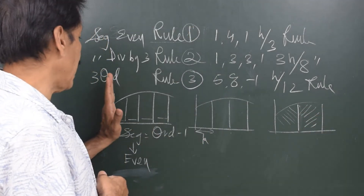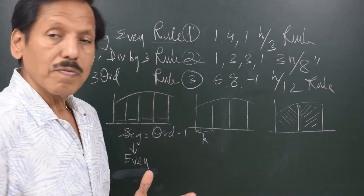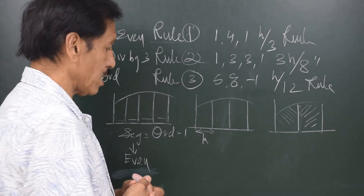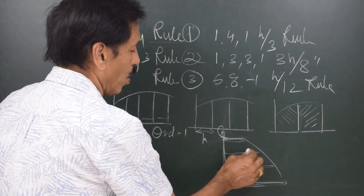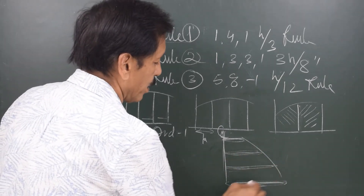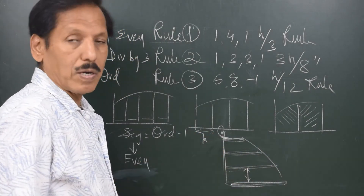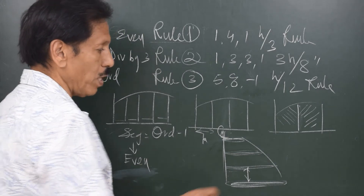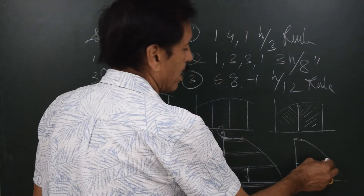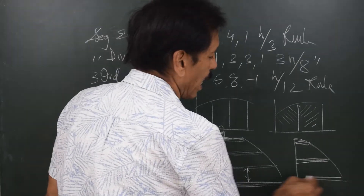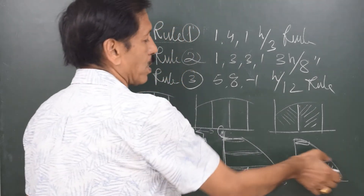We can find out areas when the ordinates are linear lines, and we can also find out the volume if the ordinates given are areas. Suppose we are given a tank and the areas of the waterplane at different equidistant levels are given — then with the help of these areas at different levels we can find out the volume of the tank. Similarly, if areas at three levels are given, we can find out the volume of water in that section using rule number three.